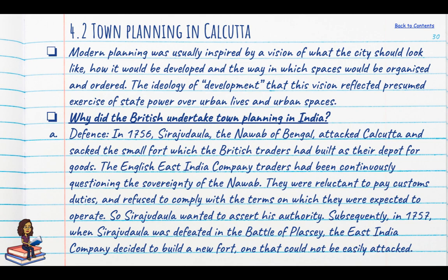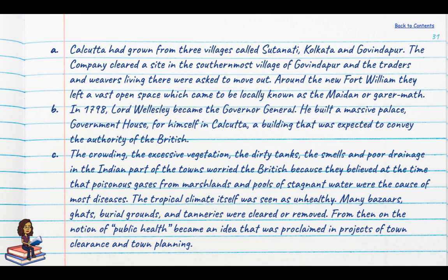Why did the British undertake town planning in India? In 1756, Siraj ud-Daulah had attacked Calcutta and defeated the British army posted there, so when Calcutta was being replanned, defence had to be foolproof. Calcutta had grown from three villages — Sutanuti, Kolkata and Govindpur. The company cleared a site in the southernmost village of Govindpur, traders and weavers were asked to move out, and the new Fort William was constructed. Just outside Fort William, a vast open space was left, known as the Maidan or Gored Mat, which offered a security vista for the fort.